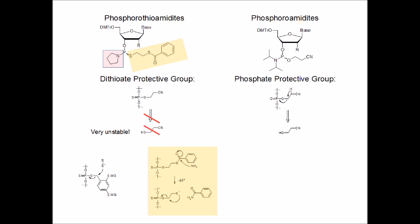This slide shows the difference of the building block for the phosphorodithioate internucleotidic linkage, the phosphorothioamidite, on the left, compared with the building block of regular phosphodiesters, the phosphoramidite, on the right. There is a difference with the amino function that is being displaced in the coupling, highlighted in red, and the protective group which is introduced through the thioamidite and will be later cleaved with ammonia, giving the free dithioate internucleotidic linkage.